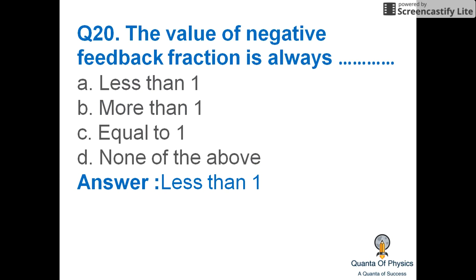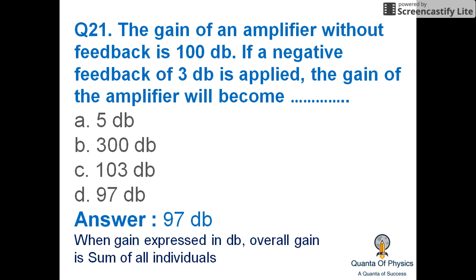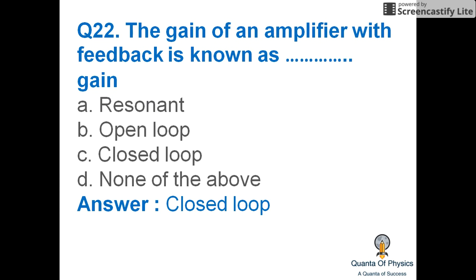The value of the negative feedback fraction is always less than 1. If the gain of an amplifier without feedback is 100 decibels and a negative feedback of 3 decibels is applied, the gain becomes 97 decibels — because when gain is expressed in decibels, the overall gain is the sum of individual gains. The gain of an amplifier with feedback is known as closed loop gain.